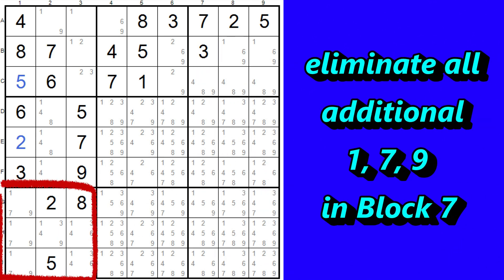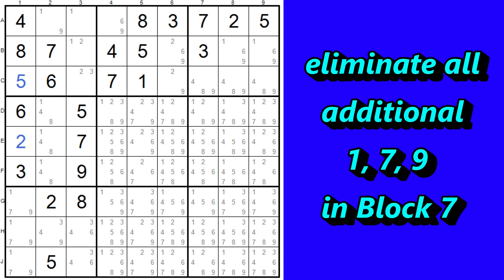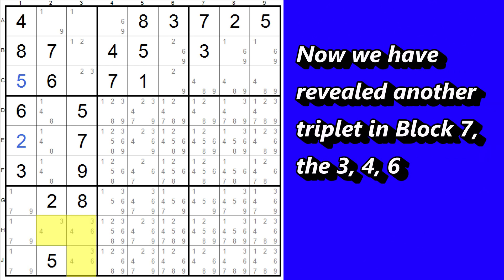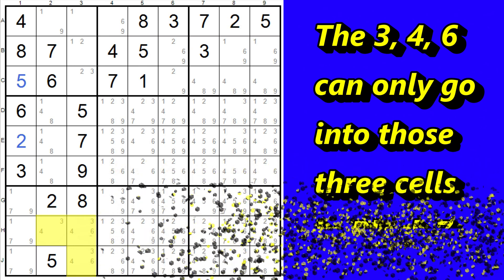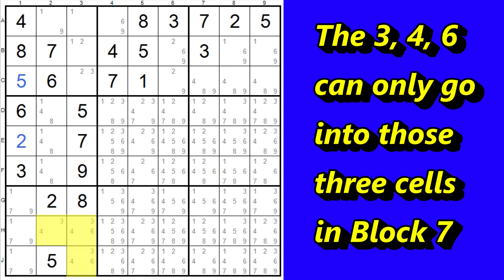Next we can look at block seven. Now we can eliminate all the ones, sevens, and nines in block seven that are not part of the triplet. So we can eliminate these three ones. There are no other sevens aside from the triplet in block seven, but there is a nine, so we can eliminate this nine. Now we have revealed another triplet, which was previously a hidden triplet — the three, four, and six in these three cells. It's still considered a triplet as long as there are three numbers that are the only numbers that can go into three shared cells. So these three cells are the only cells in the unit that can contain a three, four, or six, and is therefore considered a triplet. Here in block seven we have a three, four, six triplet, but this doesn't help us eliminate anything more since they are not in the same row or column, and we have already eliminated everything we can from the block.